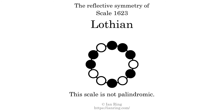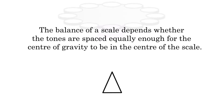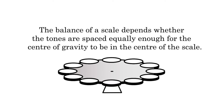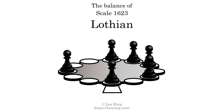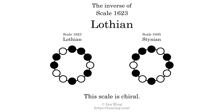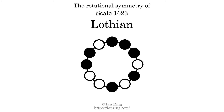This scale has no reflective symmetry. This scale has a different pattern of intervals ascending and descending, so it is not palindromic. This scale has no ridge tones. This scale is not balanced. The inverse of a scale is a mirror image — it is what you get when the sequence of intervals is reversed. The inverse of this scale is scale 3405, also known as Steinian. This scale is chiral; it cannot transform into its inverse by rotational transformation. This scale has no rotational symmetry.